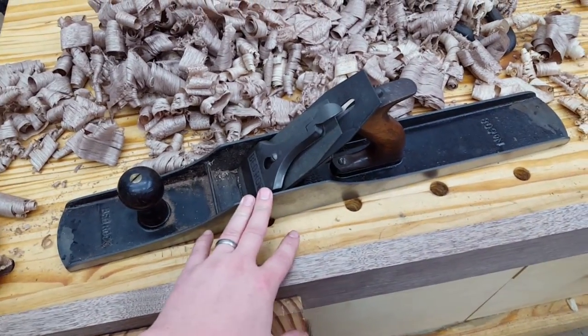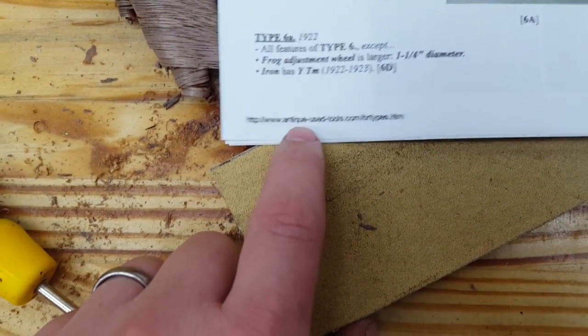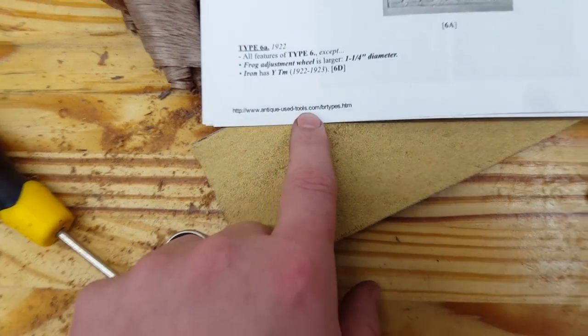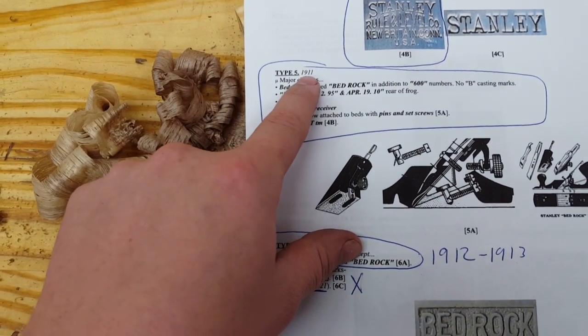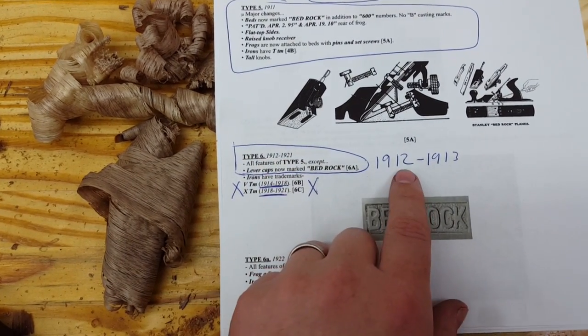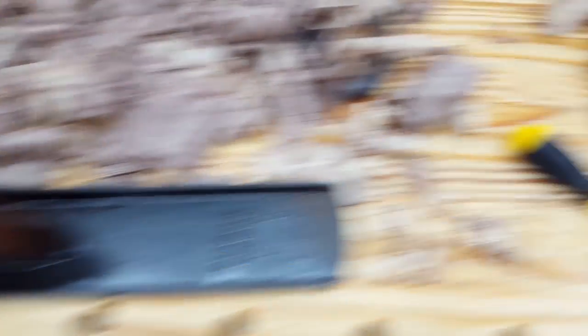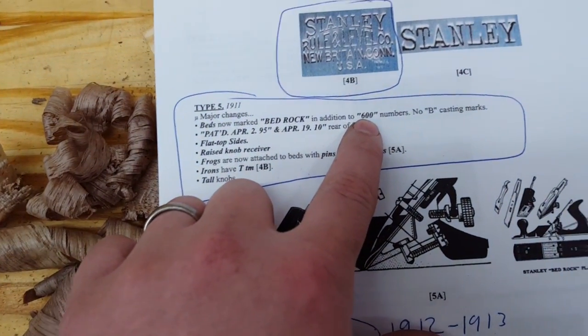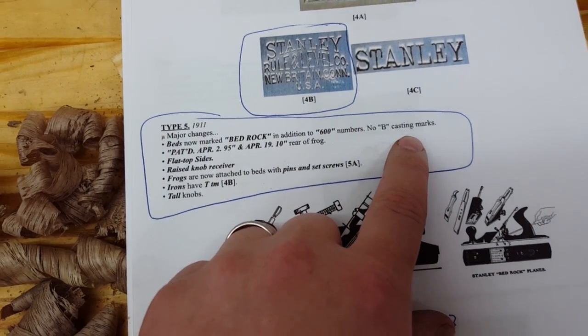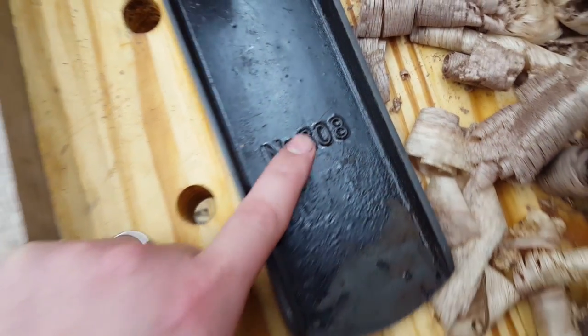So how old is this thing? This jointer, well according to antique-used-tools.com, I originally thought it was a type 5 from 1911, but I do believe it's actually a type 6 and the dates I think this is 1912 to 1913. On the type 5 the beds are now marked with bedrock, so that's when this was introduced where it says bedrock up here, in addition to the 600 numbers. And no B casting marks - I've looked over the entire body of the plane as well as the frog and I cannot find any B castings whatsoever. And of course there's a number 608 on the back side over here.